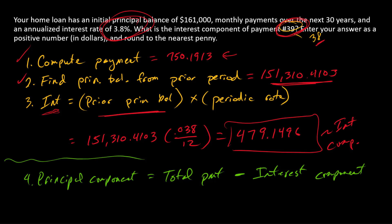And so we could find the principal component here by taking the total payment of $750.1913, subtracting the interest component that we just calculated, so minus $479.1496. And that equals $271.0417.